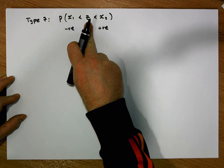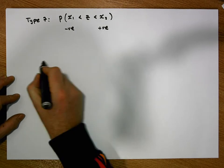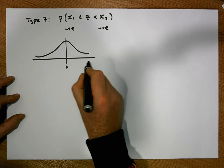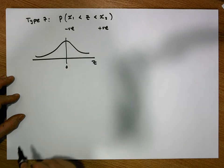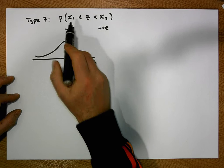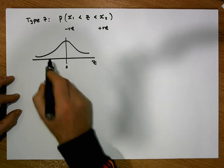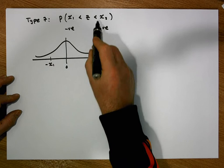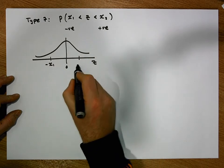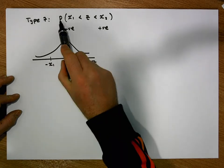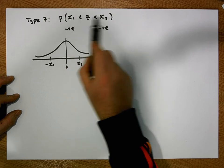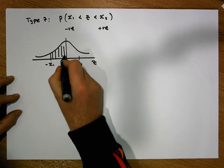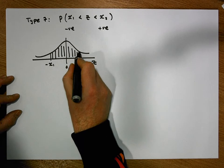With respect to the standard normal variable, let's draw our standard normal curve. Our standard normal curve is centered on zero. The horizontal axis represents our z variable. Our x1 value is a negative value over here, and our x2 value is a positive value over here. We're interested in the probability of a z-score being between those two values — the area between those two values.